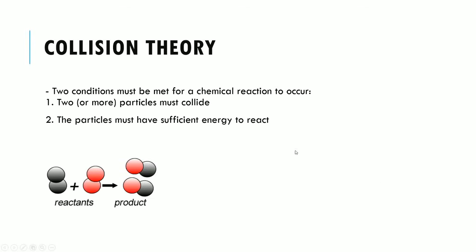Taking a look at chemical reactions in a bit more detail, we need to think about the collision theory, which states that two conditions have to be met for a chemical reaction to occur. One is that two or more particles must collide. The other is that the particles, when they do collide, have to have sufficient energy in order for the reaction to occur. So when two particles collide but don't have enough energy, the reaction won't occur.